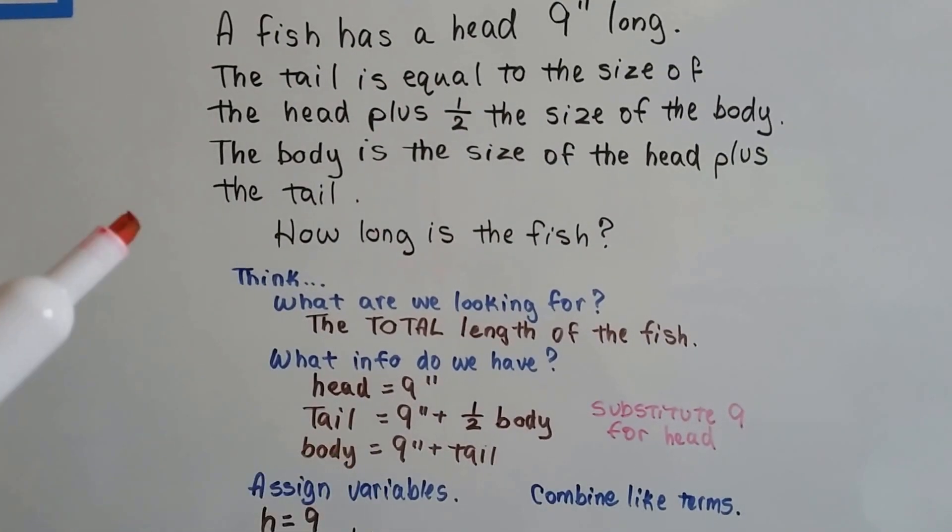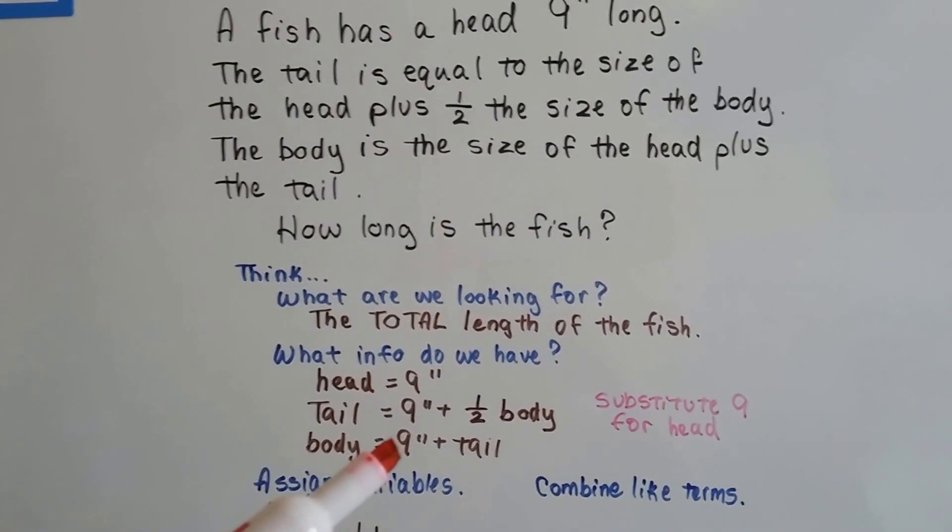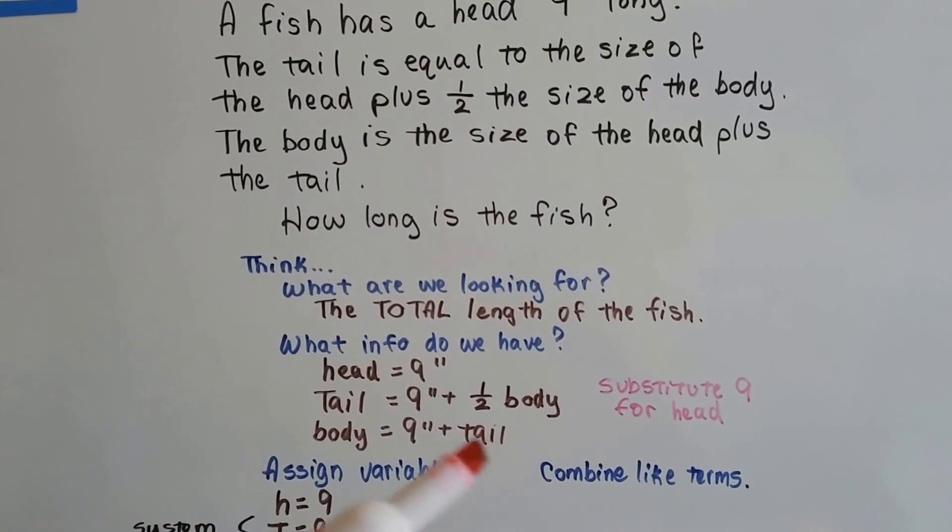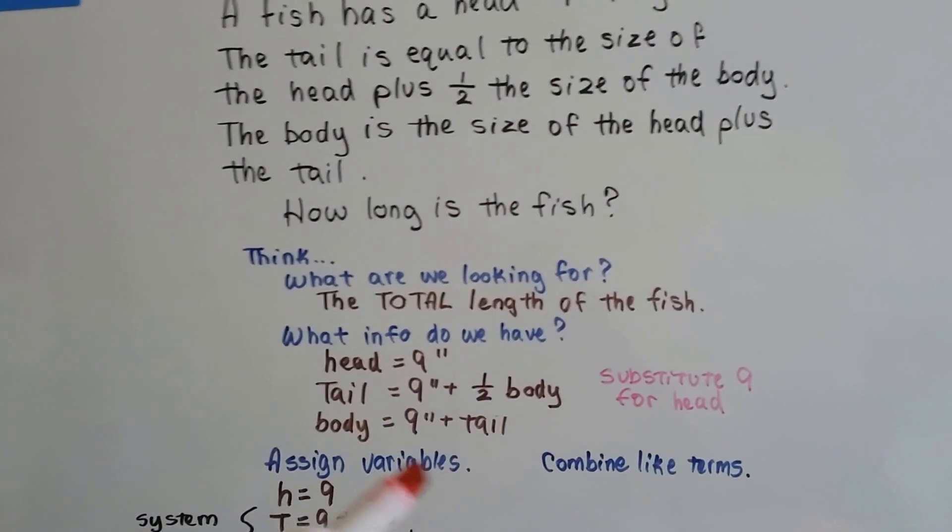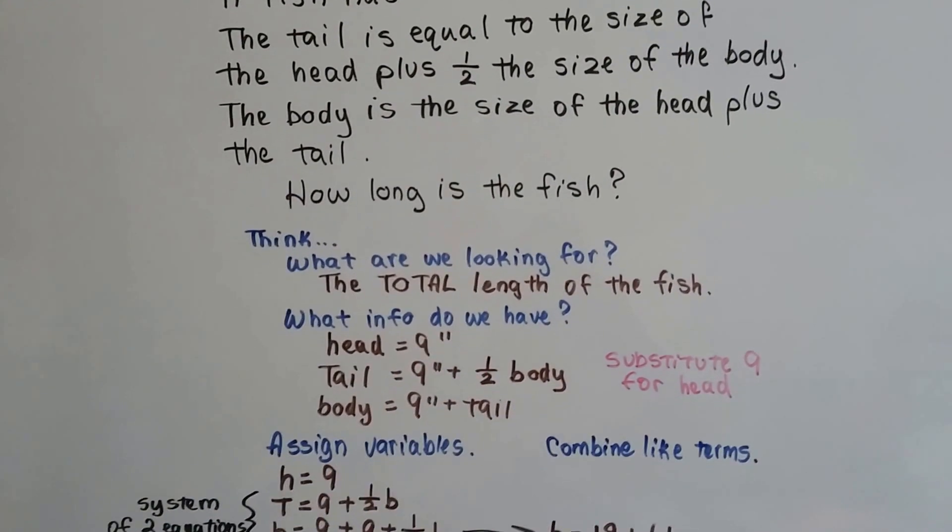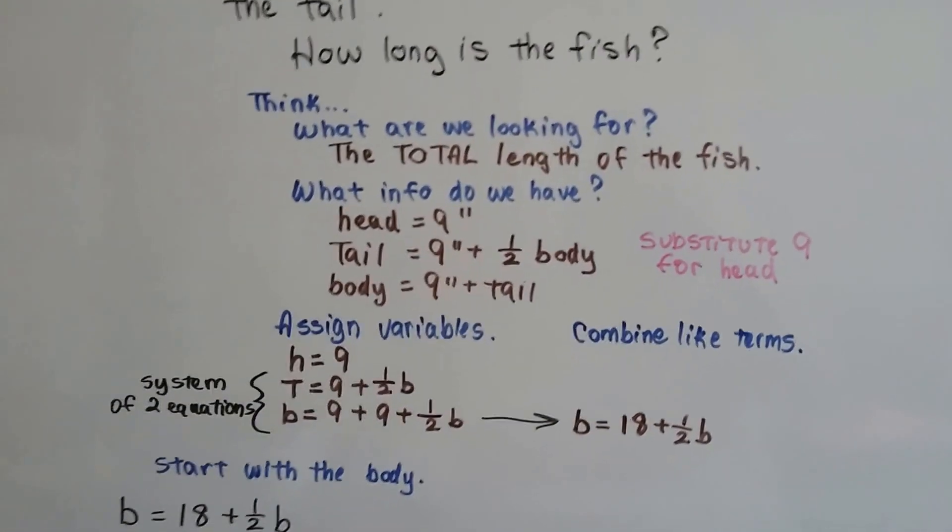And the body is the size of the head, so that's the nine inches again, plus the tail. Well, if the body is nine inches plus the tail, and the tail is nine plus half body, then the body is nine plus nine plus half body. So we can combine these like terms.